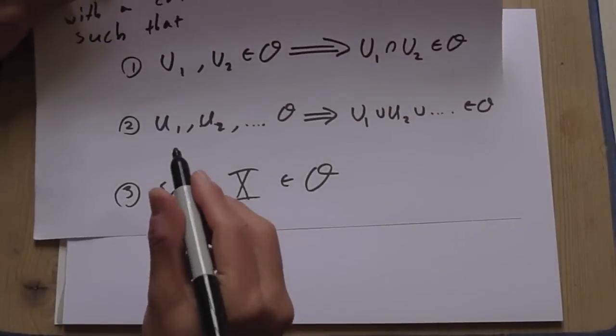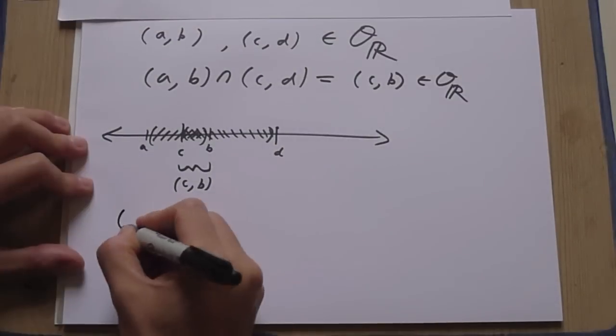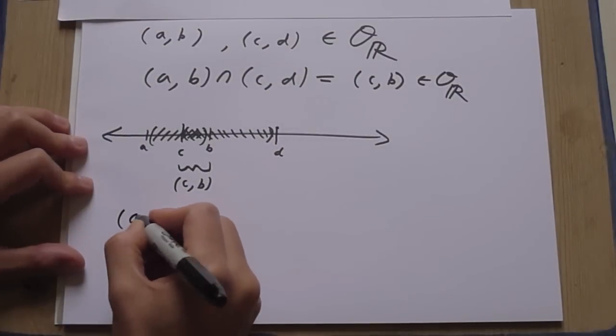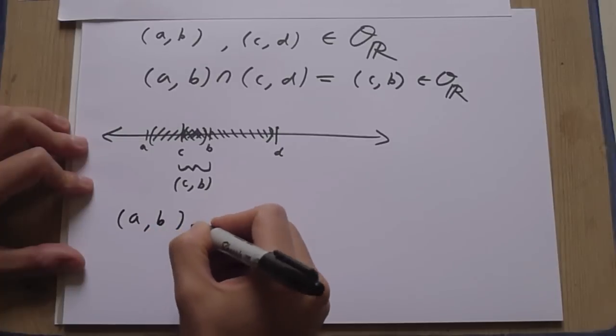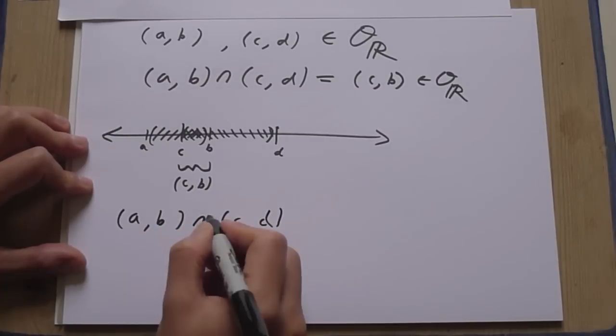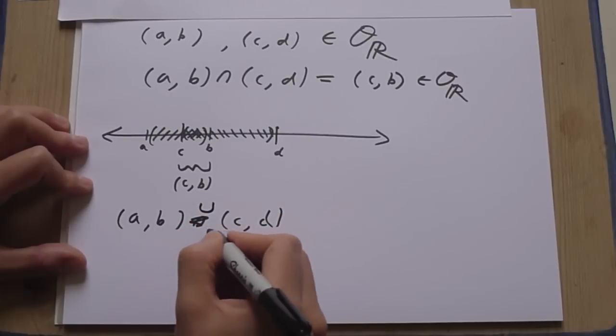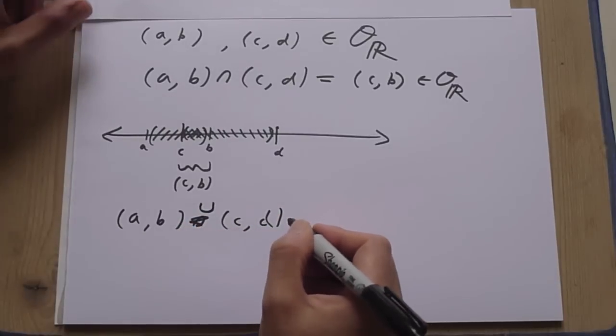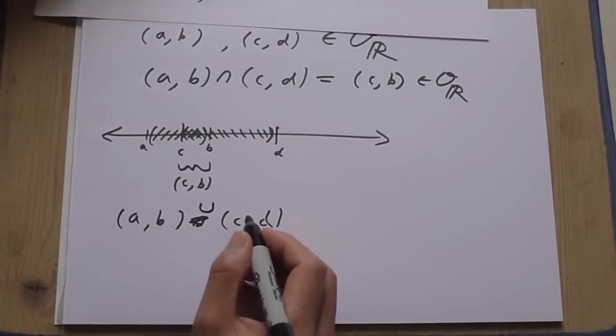The second one is satisfied almost by observation. We'll just do it for two open intervals. A, B, union C, D. A, B, union C, D is a union of open intervals. So it's open.